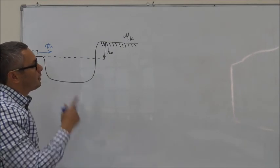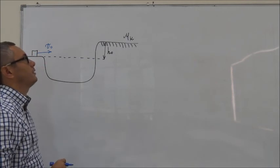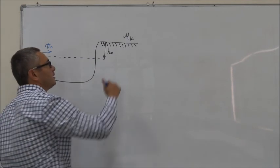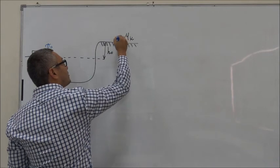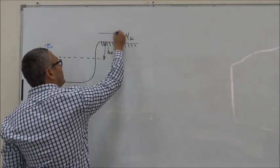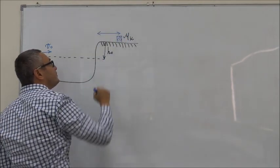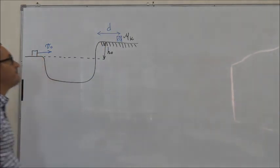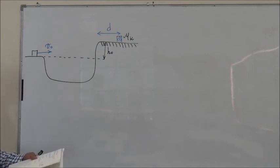In other words, there is friction, and we are given the coefficient of kinetic friction. Eventually, the block stops somewhere here at a distance D. So the question is, what is the value of D if we know the initial velocity, the height H, and the coefficient of kinetic friction?